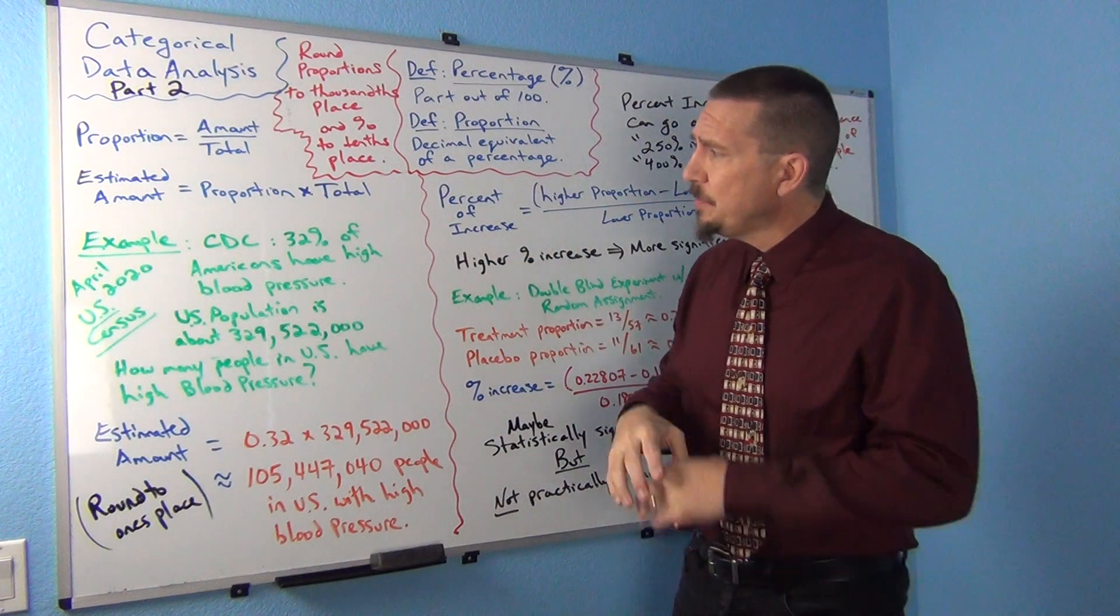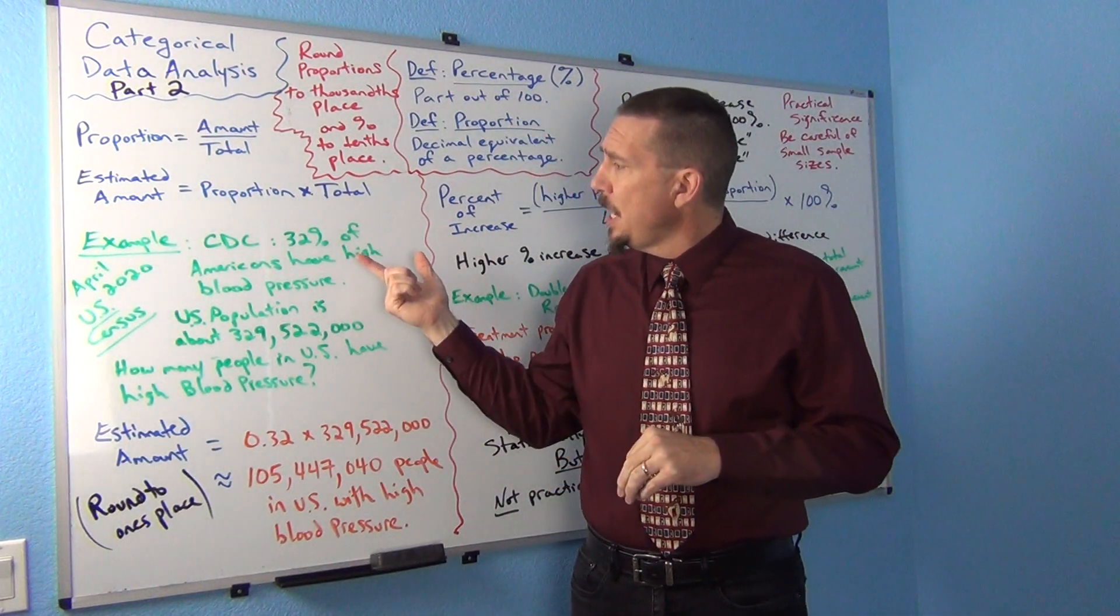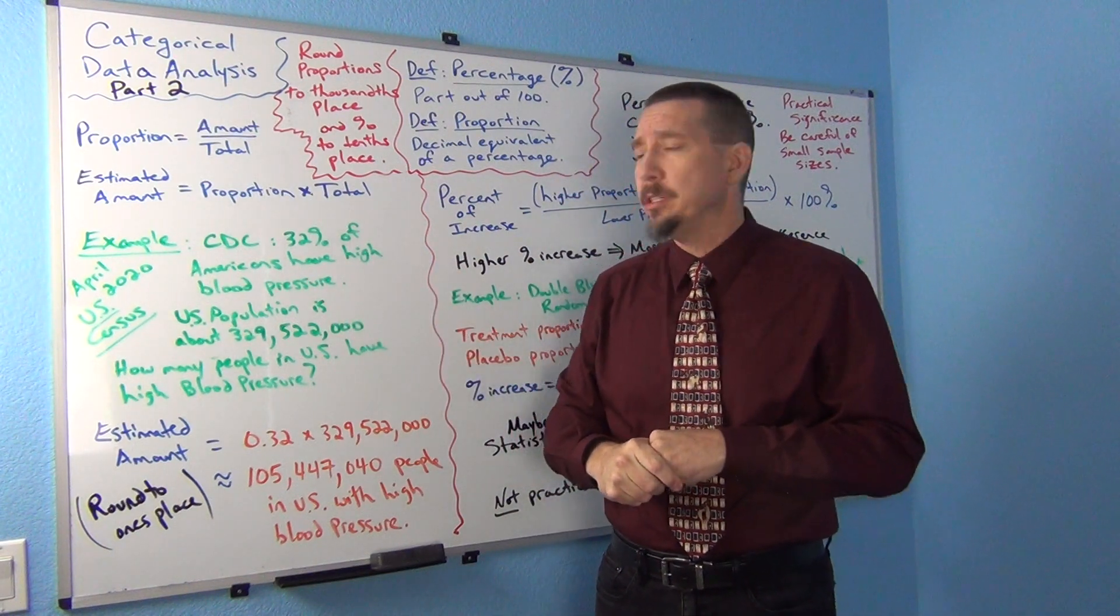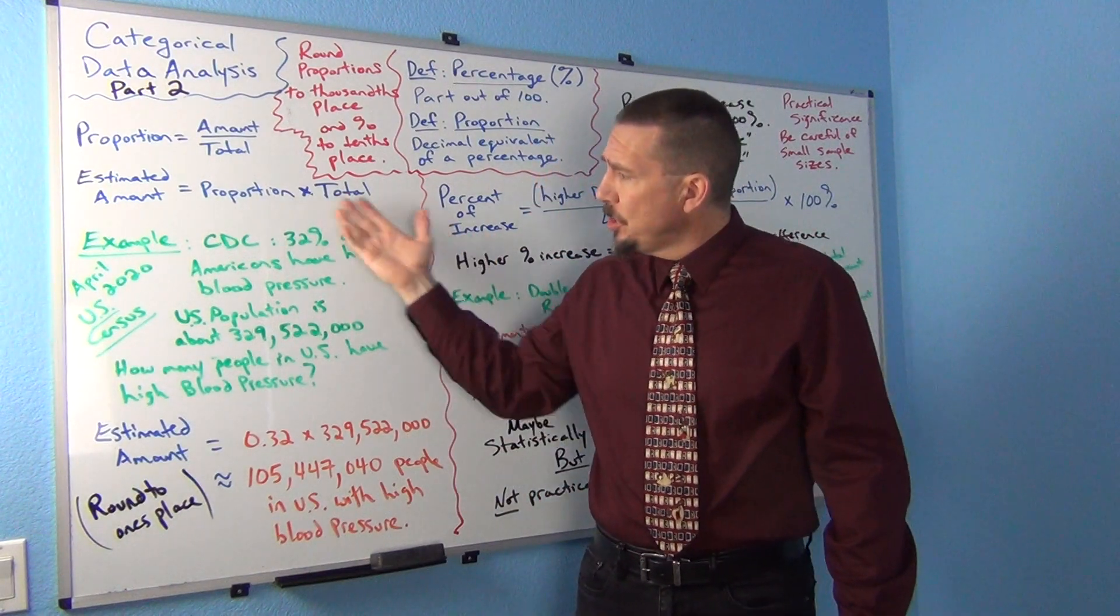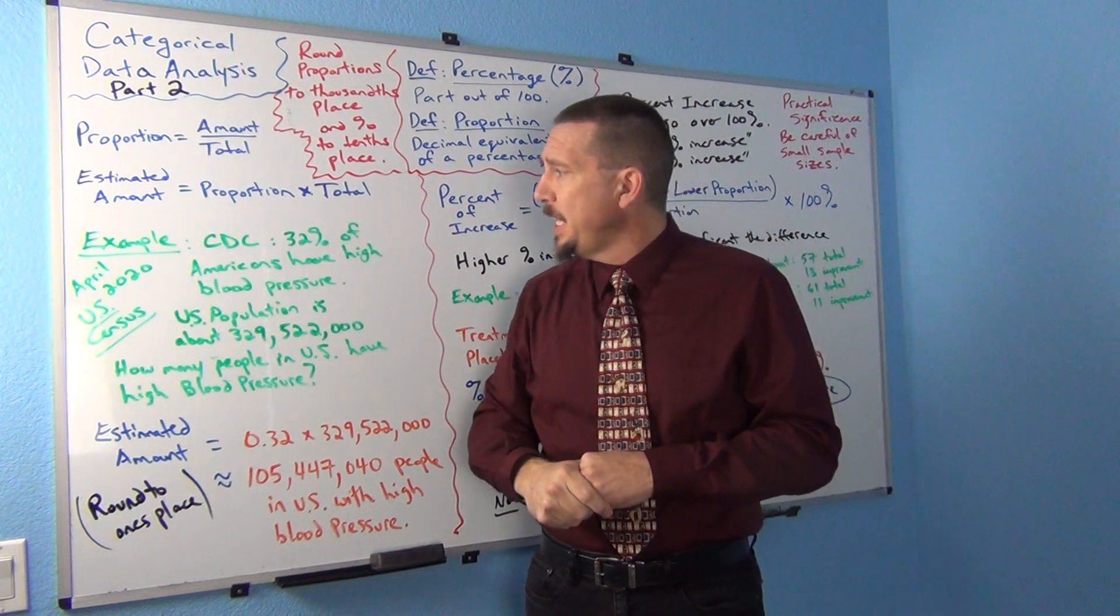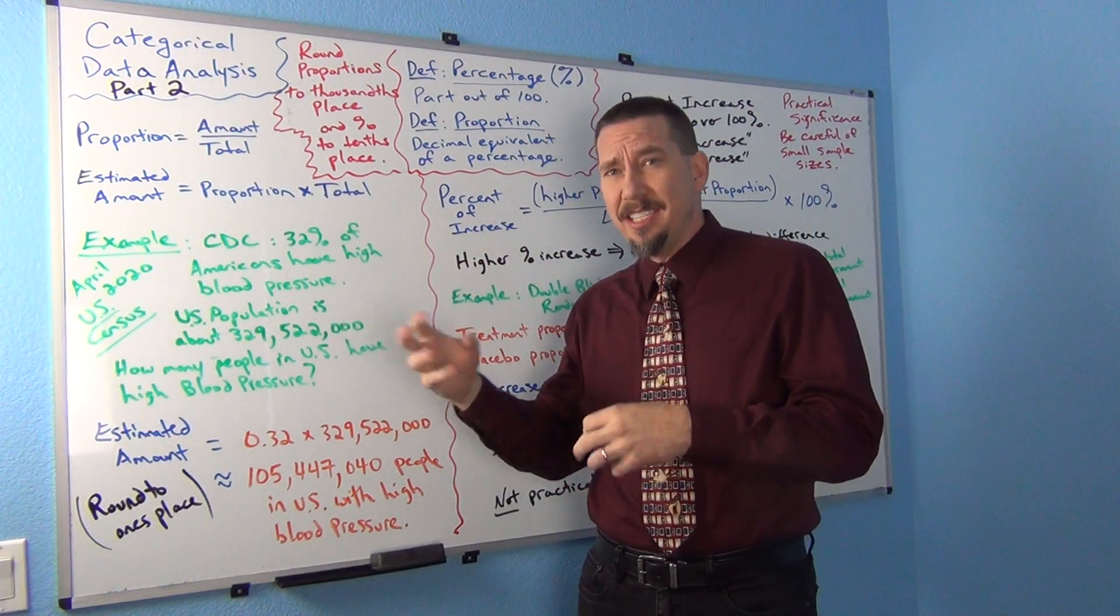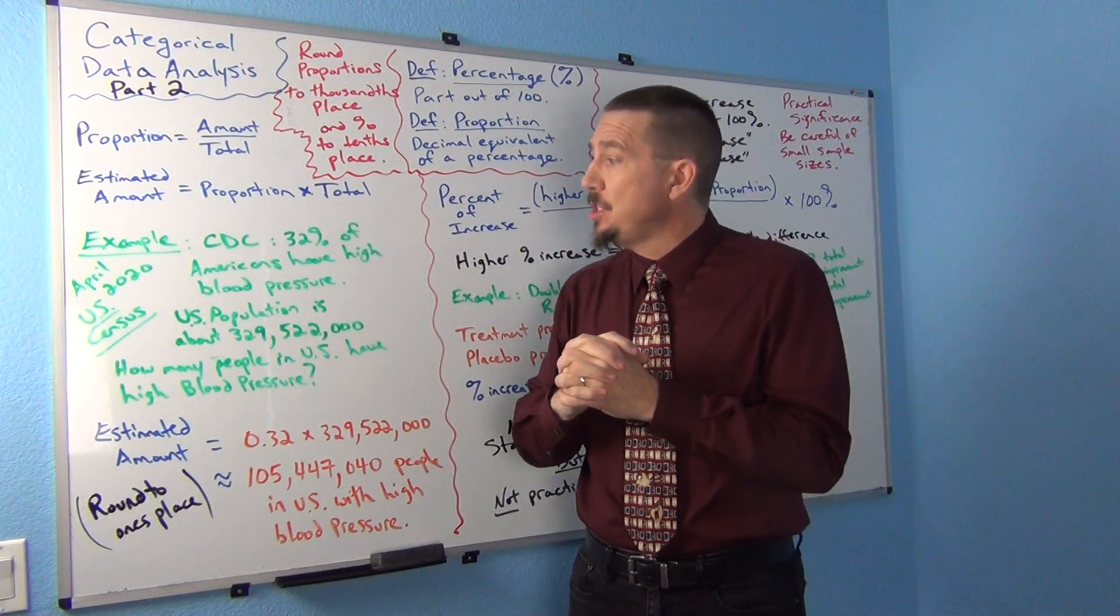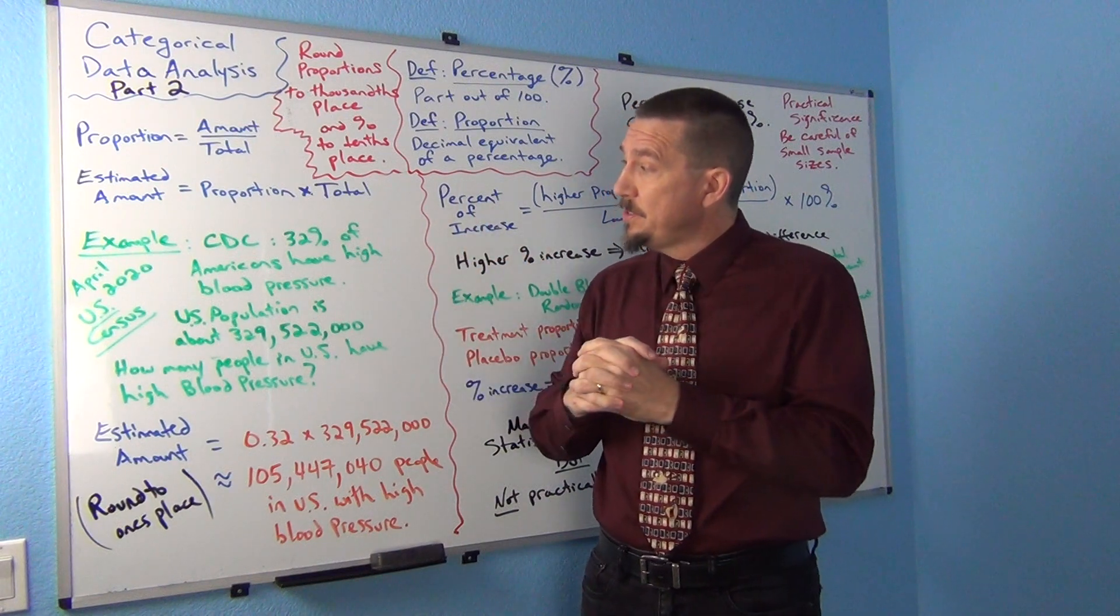I'll give you a good example here. So the Center for Disease Control estimates that about 32% of Americans have high blood pressure. So if I was looking at that maybe I read that in an article or somewhere on the CDC website and I'm thinking what implications does that have for different populations? Like for the population of the U.S. of all people in the U.S.